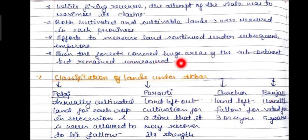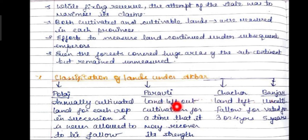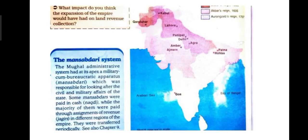Even the forests, which covered huge areas of the subcontinent, remained unmeasured. The classification of land under Akbar was done on four bases: Polaj — annually cultivated land for each crop in succession, never allowed to lie fallow; Parauti — land left out of cultivation for a time so it may recover its strength; Chachar — land left fallow for three or four years; and Banjar — uncultivated land for approximately five years or more.